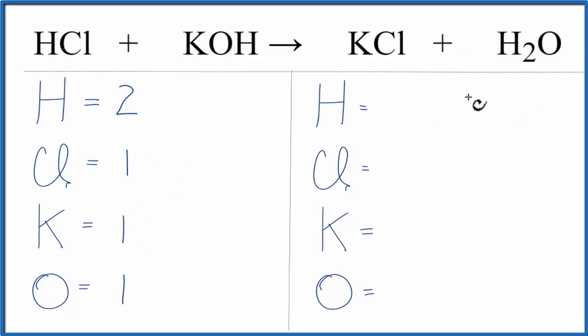On the product side of the equation, we have two hydrogens, one chlorine, one potassium, and one oxygen.